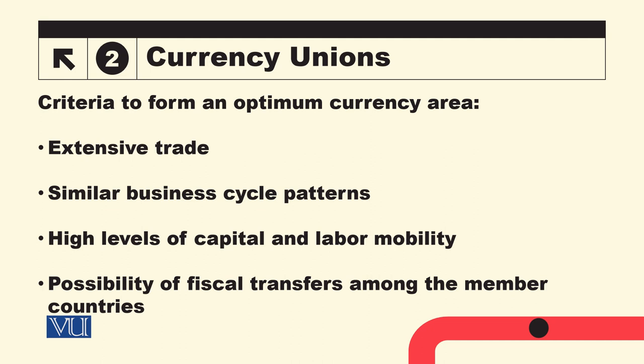There should also be the possibility of fiscal transfers — wealthier countries can help poorer ones. This is important because monetary policy cannot be used independently in a currency union, so there should be flexibility in fiscal policy to handle economic imbalances.